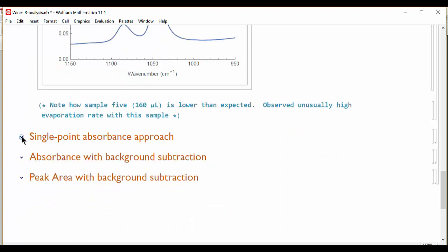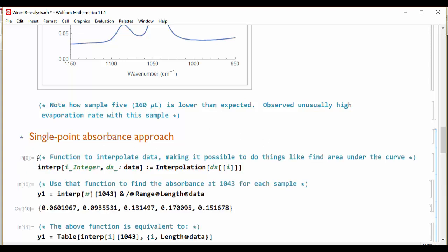So we'll look at a couple different approaches to analyzing these data. First is just a single point of absorbance. I will create a function that interpolates the data points into a smooth curve, and this makes it easier to extract information such as the absorbance at a given wave number or later on in integrating the spectrum.